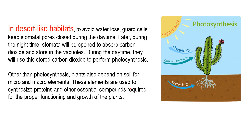In desert-like habitats, there is a scarcity of water. To avoid water loss, guard cells keep the stomata pores closed during the daytime. Desert plants take in carbon dioxide at night and absorb it from the atmosphere since their stomata remain closed during daytime. In daytime, they use the stored carbon dioxide for the process of photosynthesis. Plants also depend on soil for micro and macro elements, which are used to synthesize proteins and other essential compounds required for the proper functioning and growth of the plant.